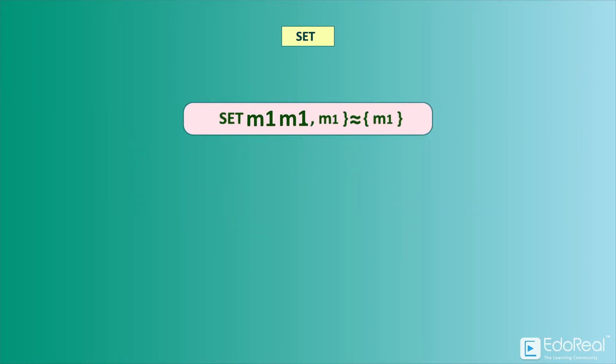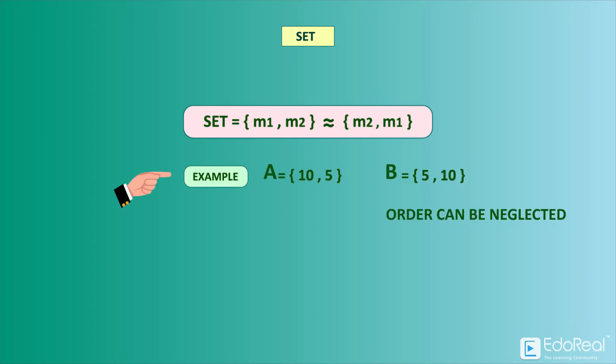If a set has two identical members, it can be represented once. For example, A is a set of {10, 5, 5}, and B is a set of {10, 5}. Here, both A and B are identical. The order of members of a set can be neglected. For example, A is a set of {10, 5}, and B is a set of {5, 10}. Here, both A and B are identical.